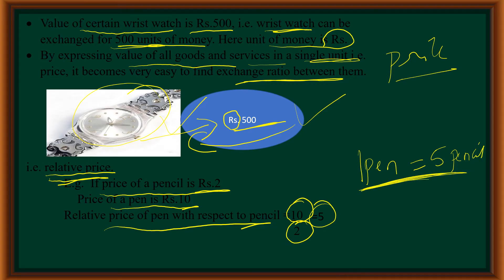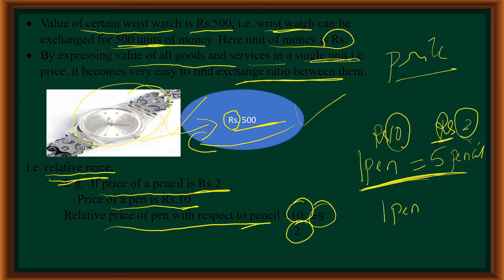This is the exchange ratio between pen and pencil. The value of the pen is expressed in terms of rupees, that is 10, and the price of the pencil is also expressed in terms of rupees, that is 2. If the value of 1 pencil is 2 rupees and the value of 1 pen is 10 rupees, then to exchange without using money, you have to give 5 pencils to get 1 pen. This is what we call the relative price or exchange ratio between pen and pencil.